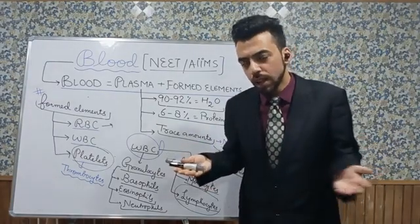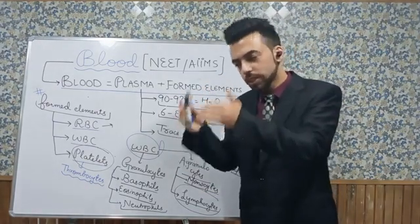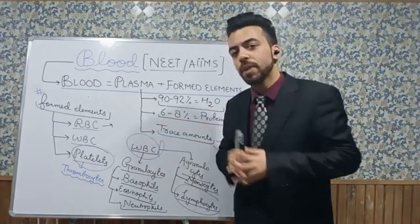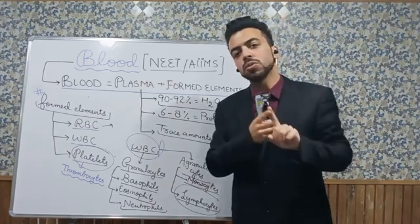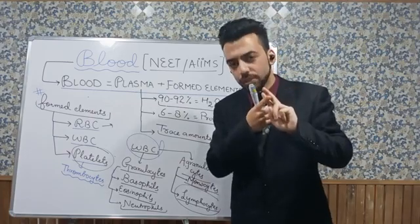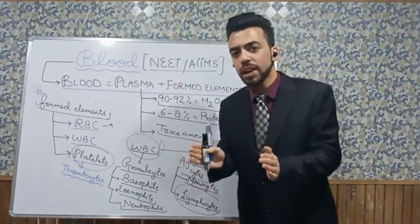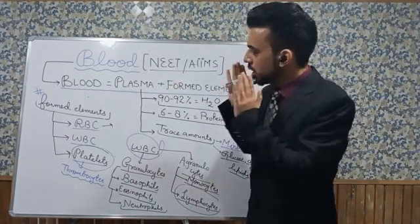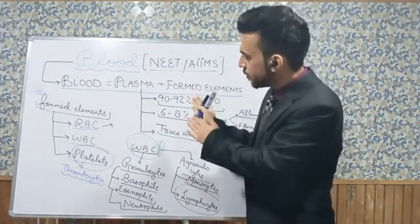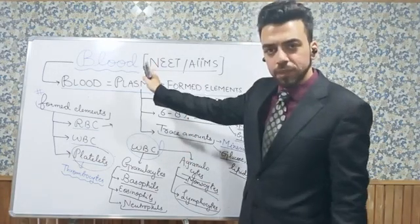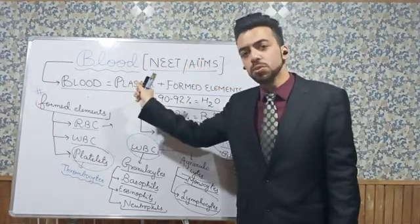Blood is a body fluid. In every human body there are fluids, and there are two types of body fluids. One is called blood, and another one is called lymph. However, both fluids are important, but blood is more important. Among the two body fluids, blood performs the majority of the transport and is the most extensively used body fluid.